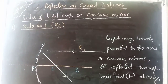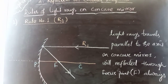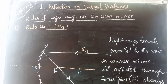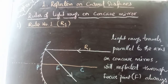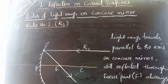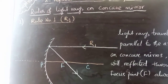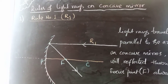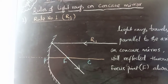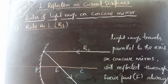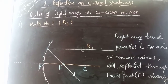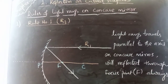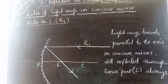Good morning, dear students. This is the second video of the first chapter in your physical science. In the first video, we already discussed concave mirrors and convex mirrors, their differences, and some major important points on mirrors and curved surfaces. In this video, we will discuss light rays on the concave mirror and how they act on it.